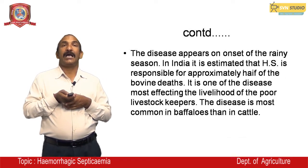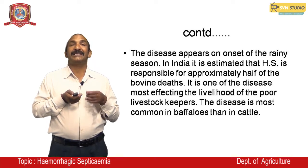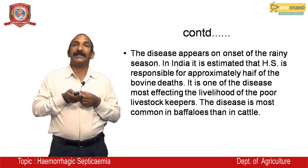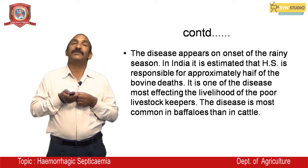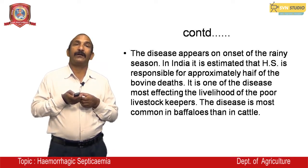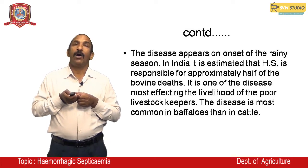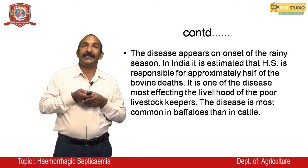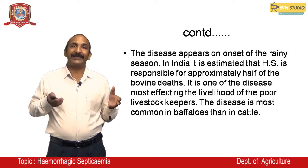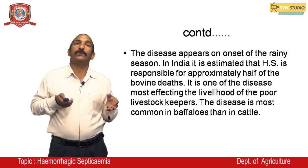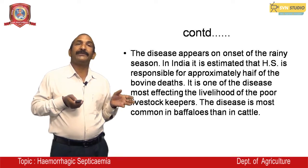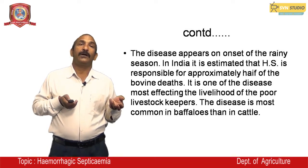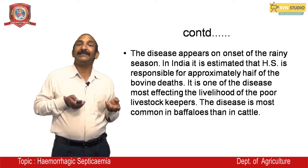The disease appears at the onset of the rainy season. In India, hemorrhagic septicemia is estimated to be responsible for approximately half of bovine deaths. It is one of the diseases most affecting the livelihood of poor livestock keepers. The disease is more common in buffaloes than in cattle.